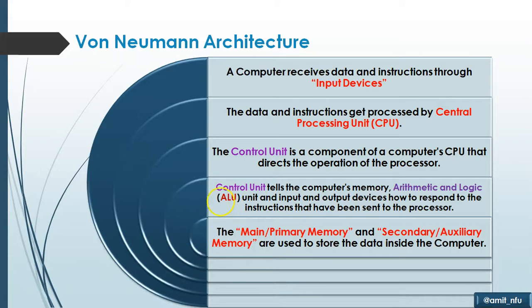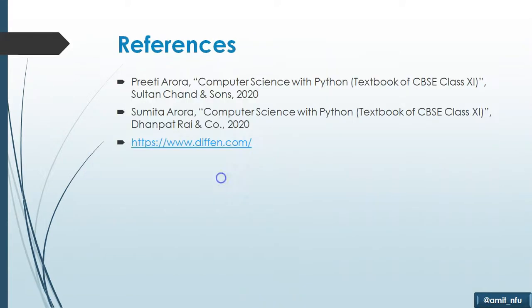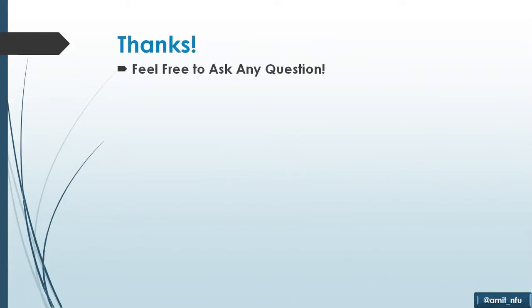Primary memory, also called main memory, and secondary memory, also called auxiliary memory, are used to store data inside the computer. We can refer to these resources for further useful information. Feel free to ask any questions. Thank you.